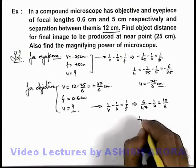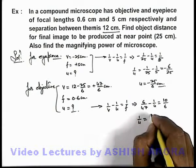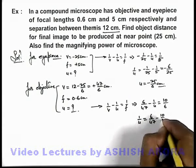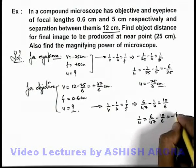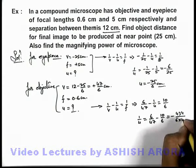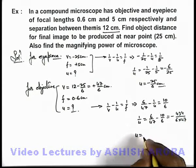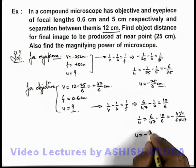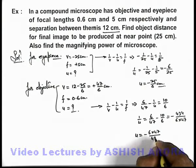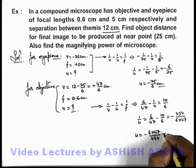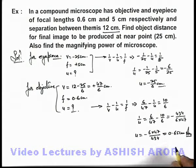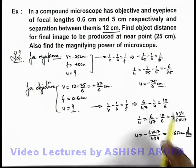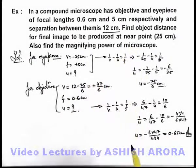On further simplifying, 1/u equals 6/47 minus 10/6. Taking the LCM gives us minus 434 divided by (6 multiplied by 47). So the object distance we are getting is negative of 6 times 47 divided by 434, which gives us 0.65 centimeters. That is the answer to the first part of this problem — the object distance such that the final image is produced at the near point.